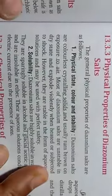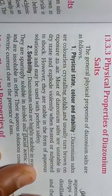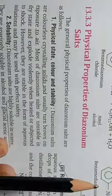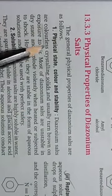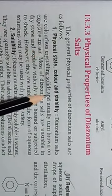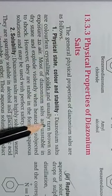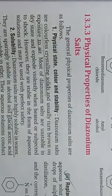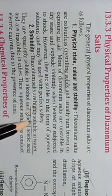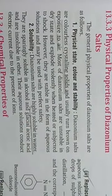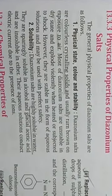Regarding physical properties of diazonium salts: they are colorless crystalline solids that usually turn brown on exposure to air, and they are highly soluble in water. Moving to chemical properties, the reactions of diazonium salts can be divided into two groups.